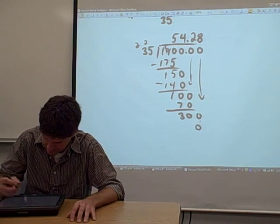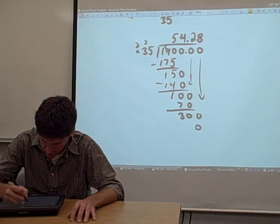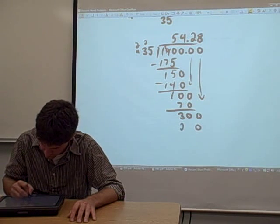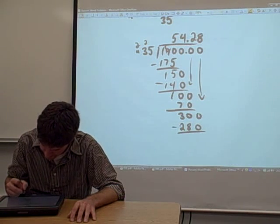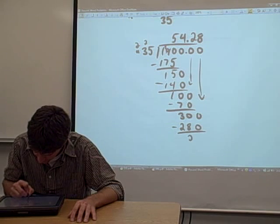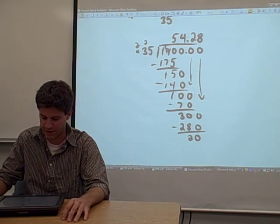8 times 35, 4. 8 times 3 is 24. We get a 28. Subtract. And we still have a non-zero remainder.